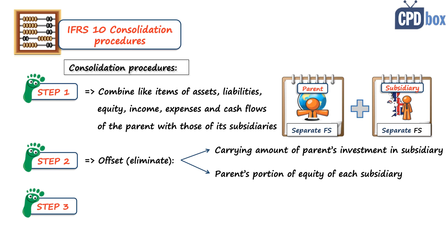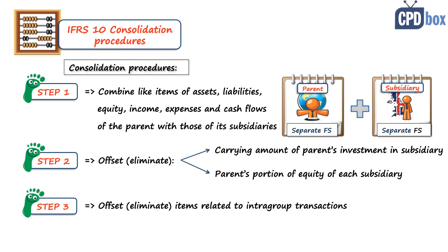Step number three: offset or eliminate in full intragroup assets, liabilities, equity, income, expenses, and cash flows relating to transactions between companies in the group. This is because from the point of view of external users of the group, there is no such transaction. That's the basics, and there is a nice video with a simple Excel example illustrating these procedures on this channel, so check that out.